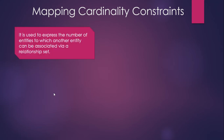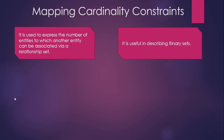The definition states: it is used to express the number of entities to which another entity can be associated by a relationship set. Mapping constraints are used with binary sets — that is, with two entities or two sets. So we can say it is useful in describing binary sets.